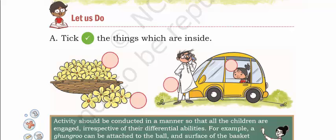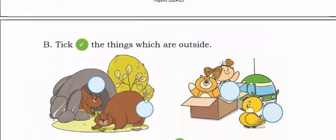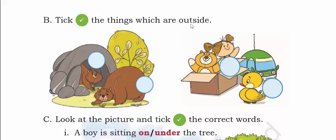Now let us tick the things which are inside. These flowers are inside the basket, so we put a tick mark here. This girl is inside the car, so we put a tick mark. But this man is outside, so we do not put a tick mark, and these flowers are also outside, so no tick mark. Now tick the things which are outside. This bear is outside — tick mark. This bear is inside — no tick. This duck is outside — tick mark. But these toys are inside the box, so no tick mark.